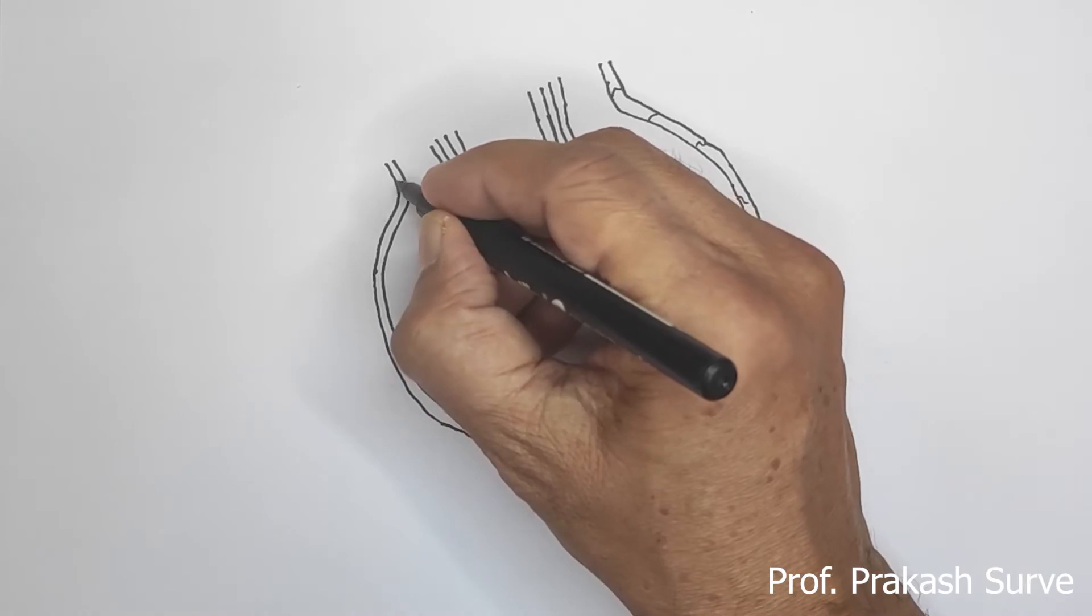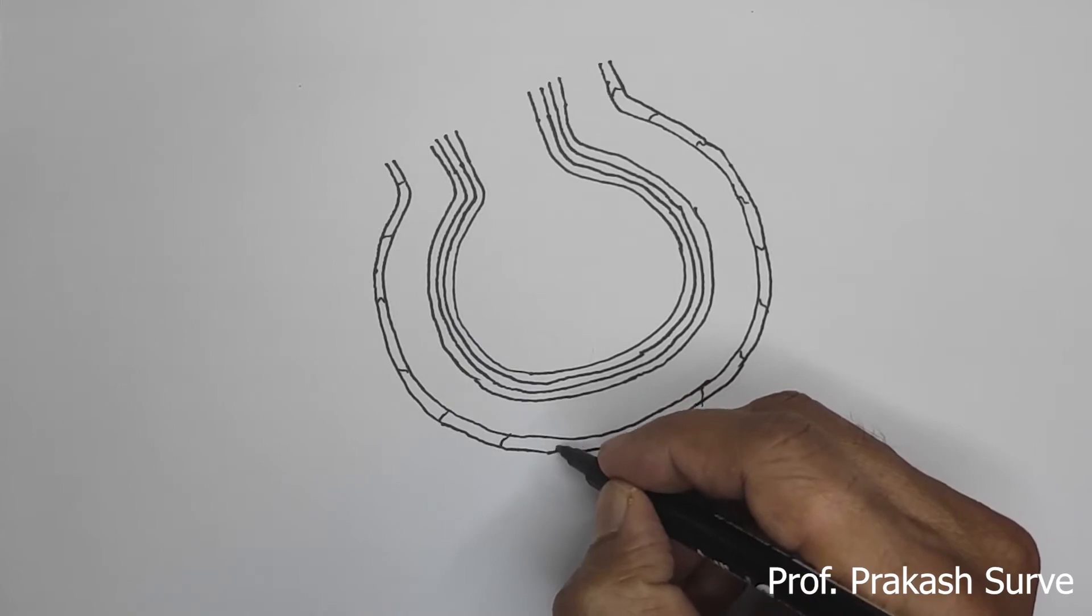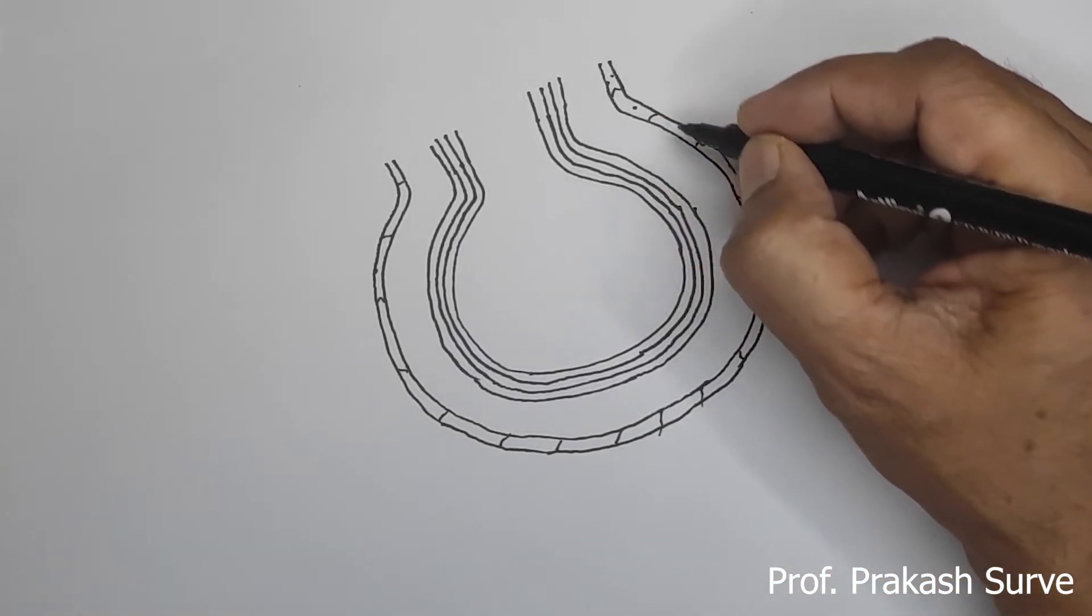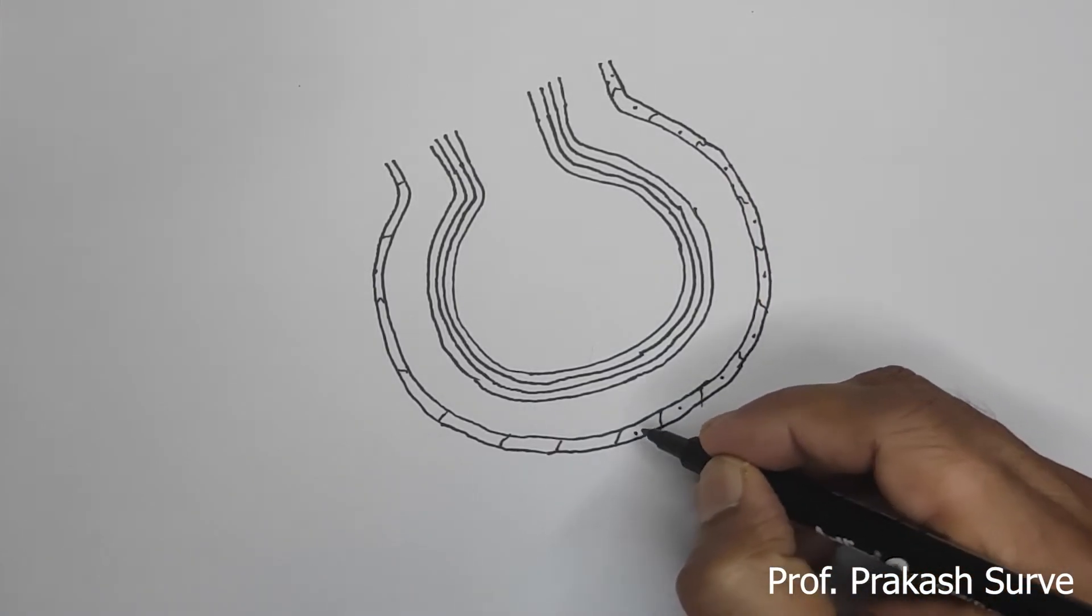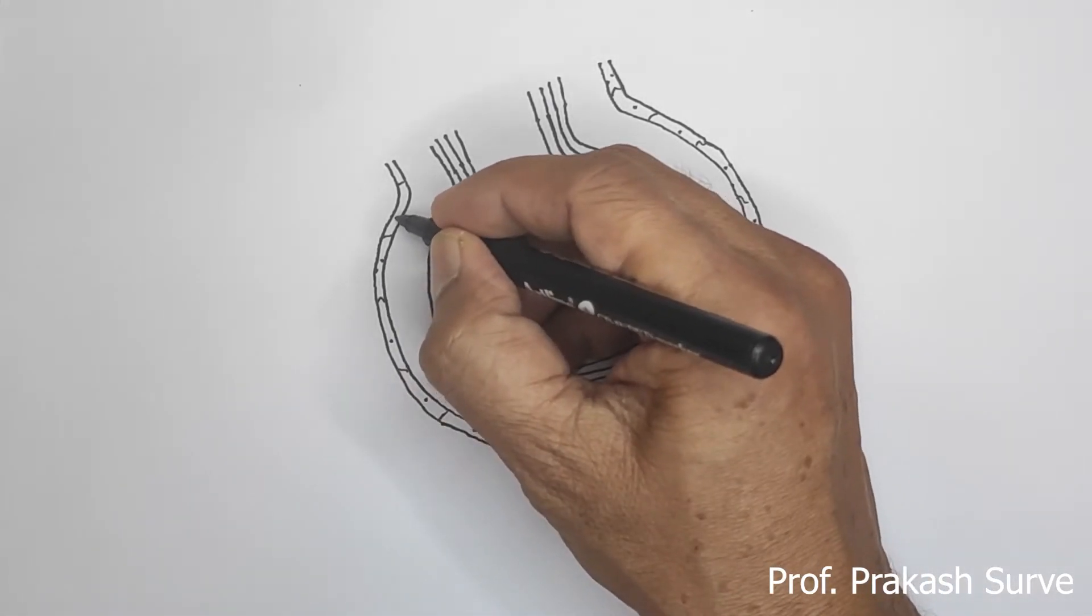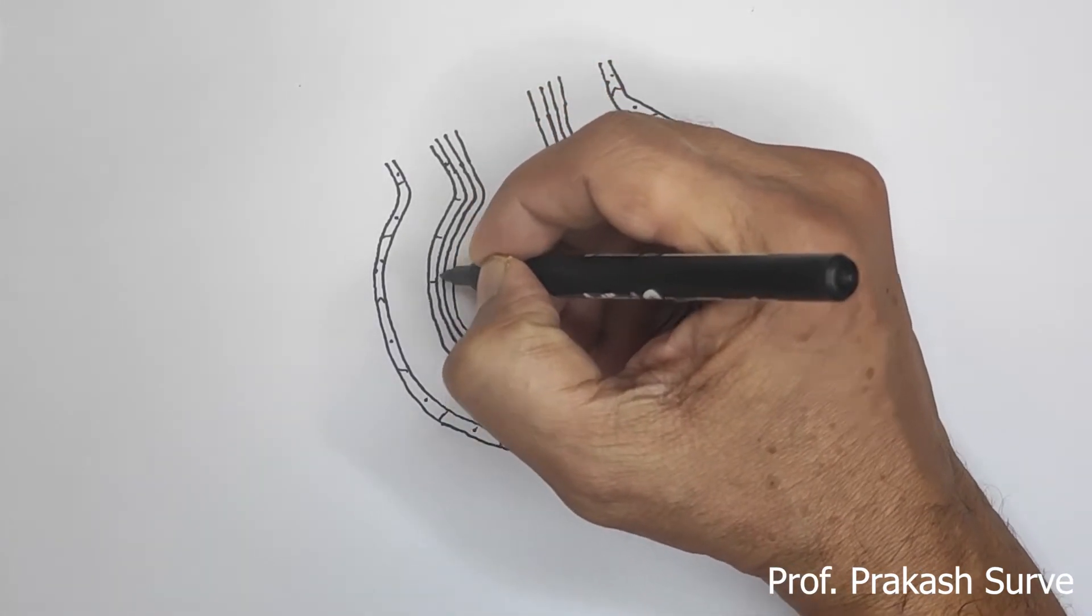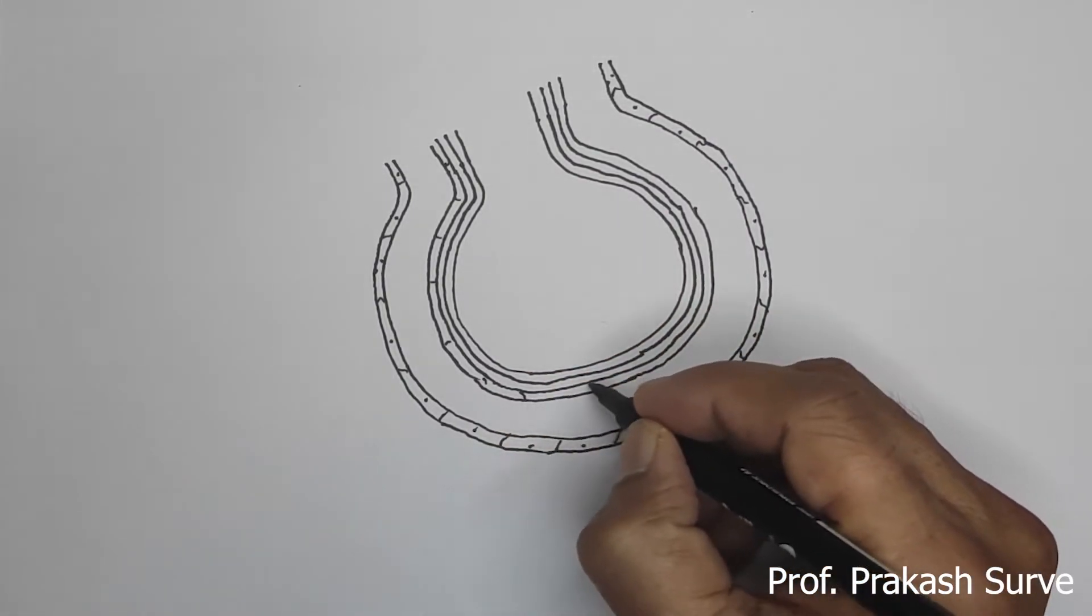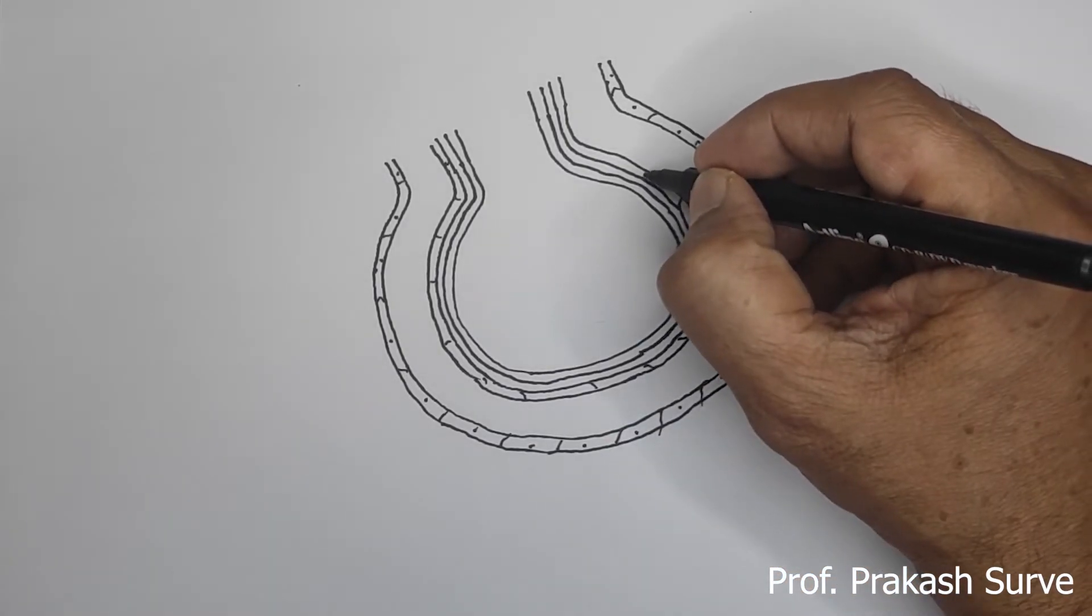Now we'll put the dot in that which is for the nucleus of the cell. Continue here. Same way for the inner respiratory membrane also, we'll follow the same.